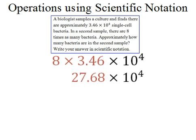Now you can bet that this is going to be one of the multiple-choice answers on the test, 27.68 times 10 to the 4th, and it's going to be the wrong answer. Can you see why? Well, the reason it's wrong is because it's not in scientific notation.